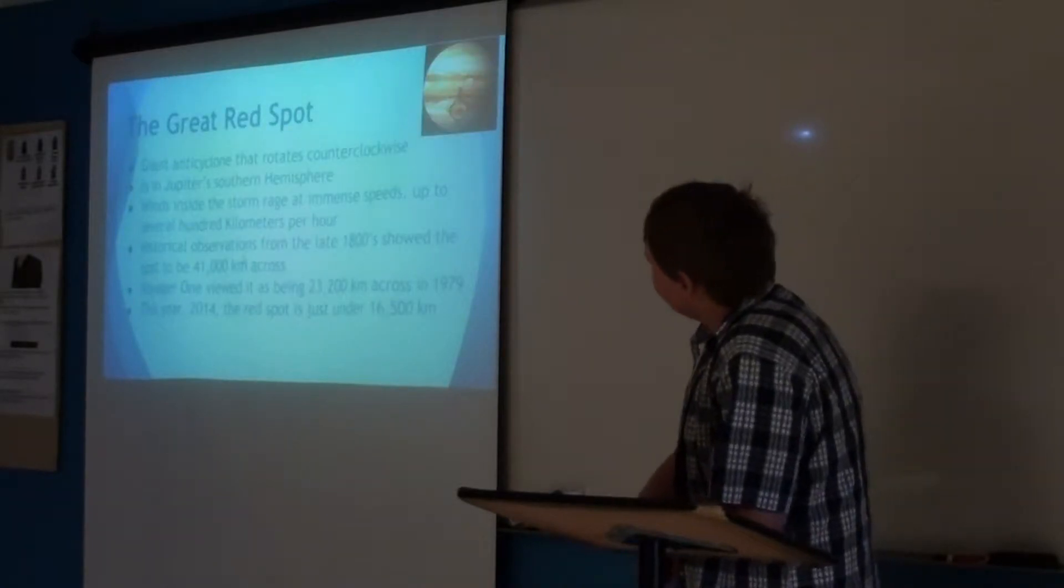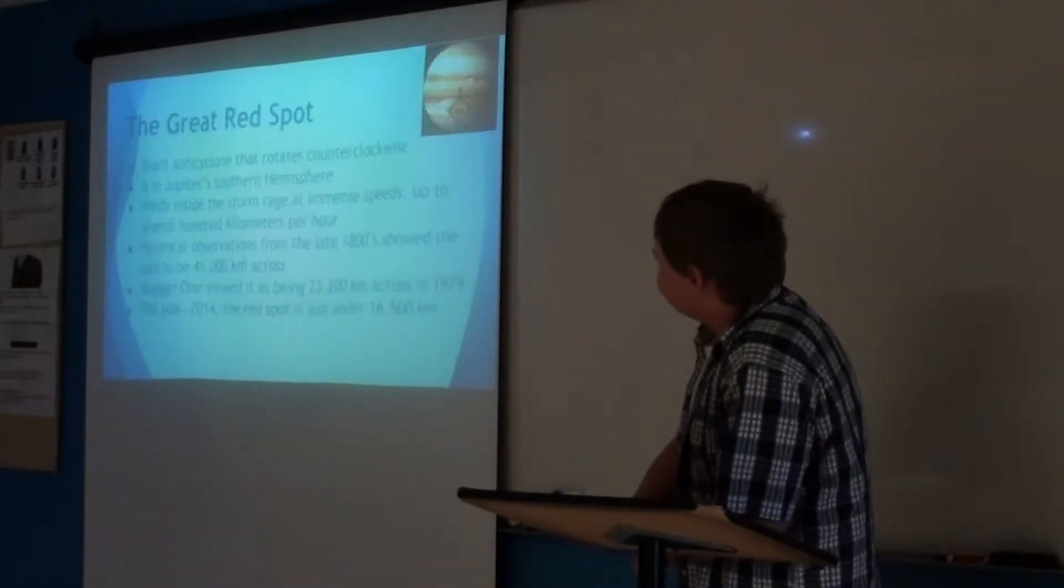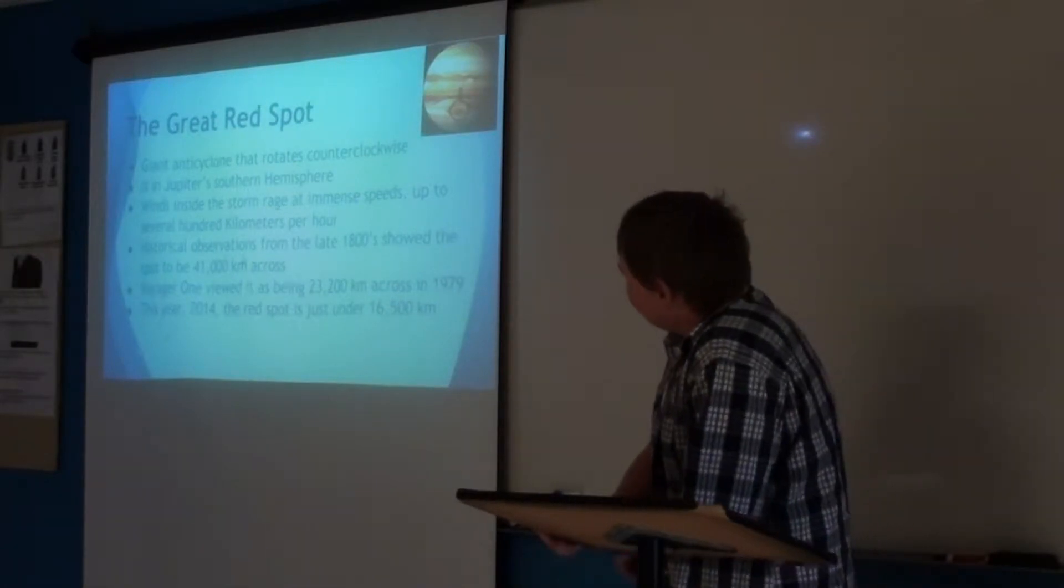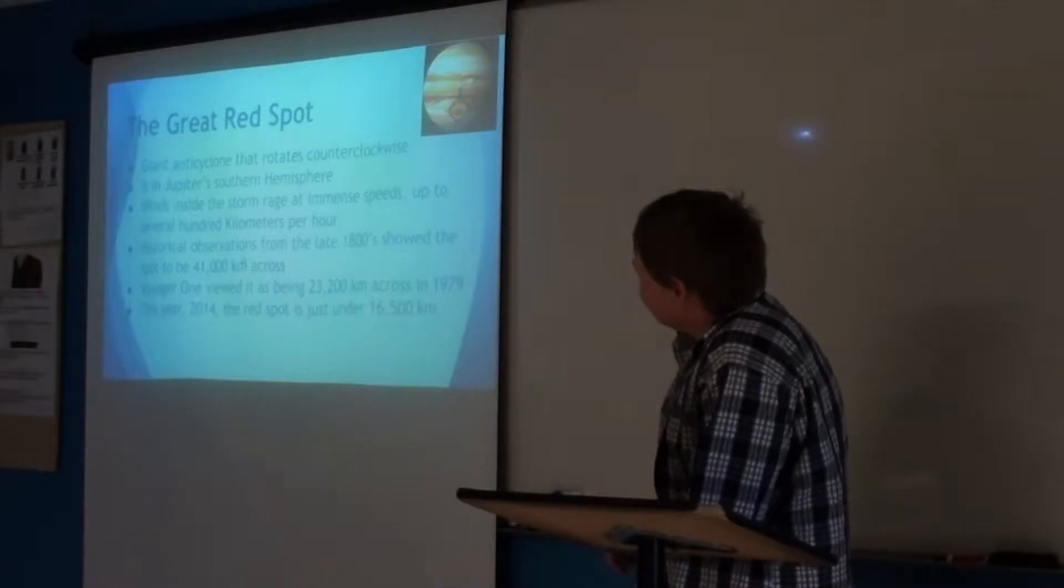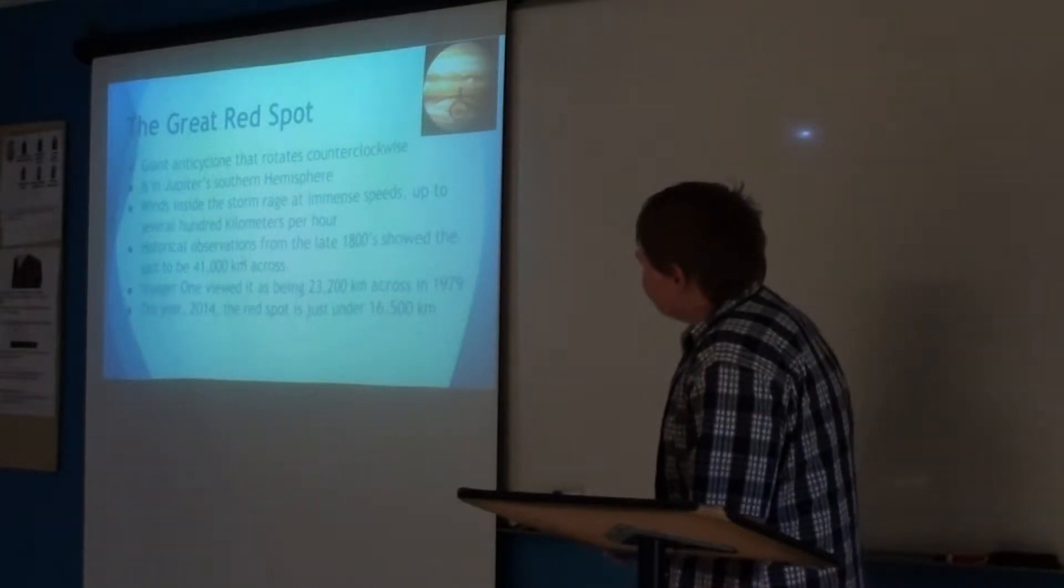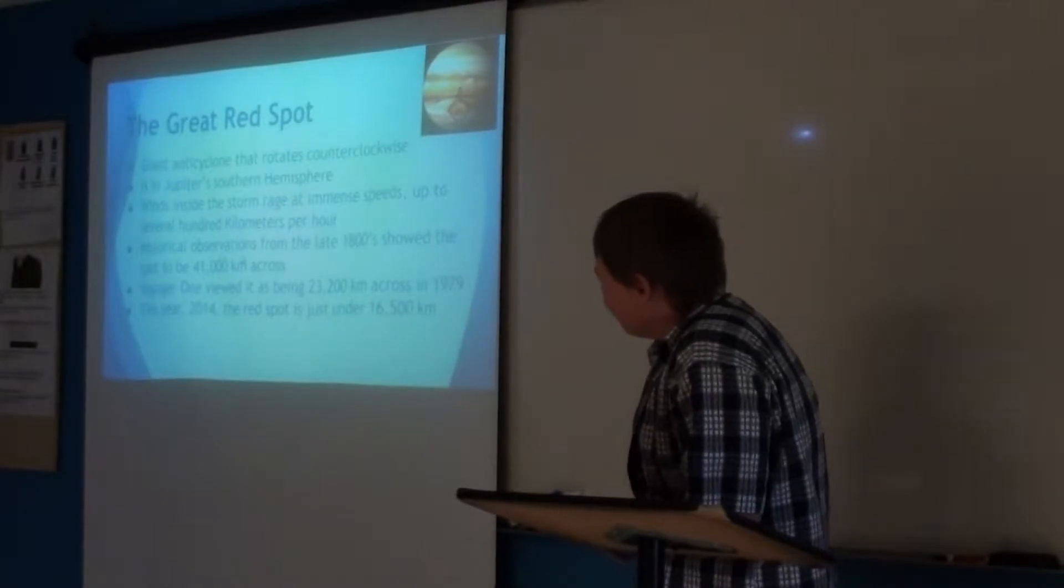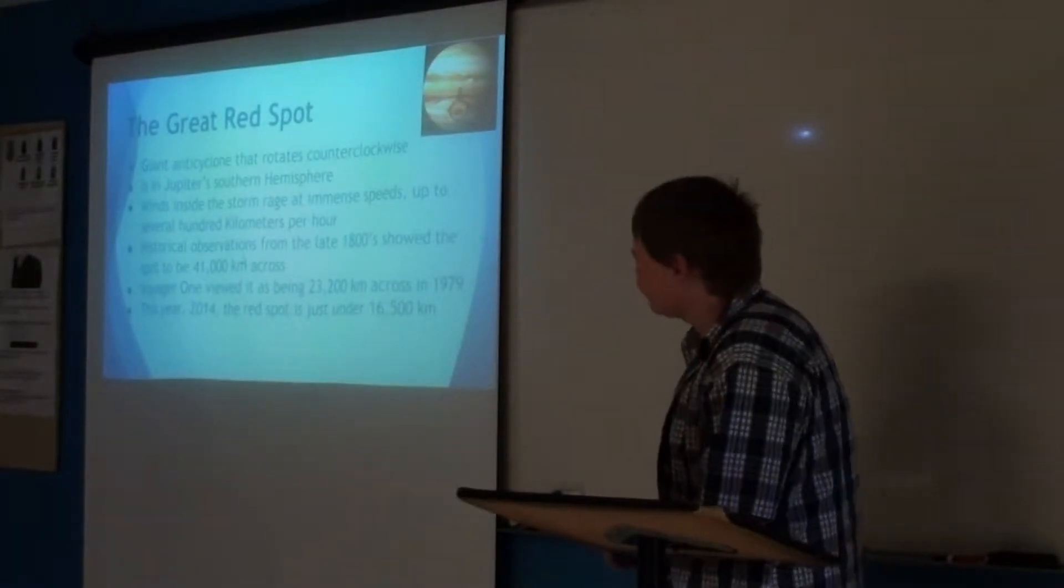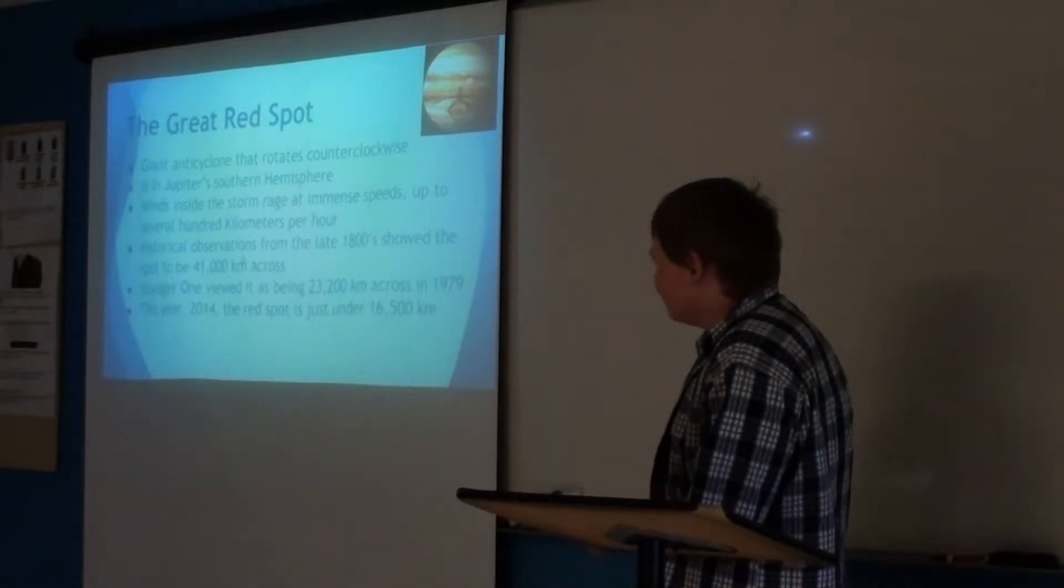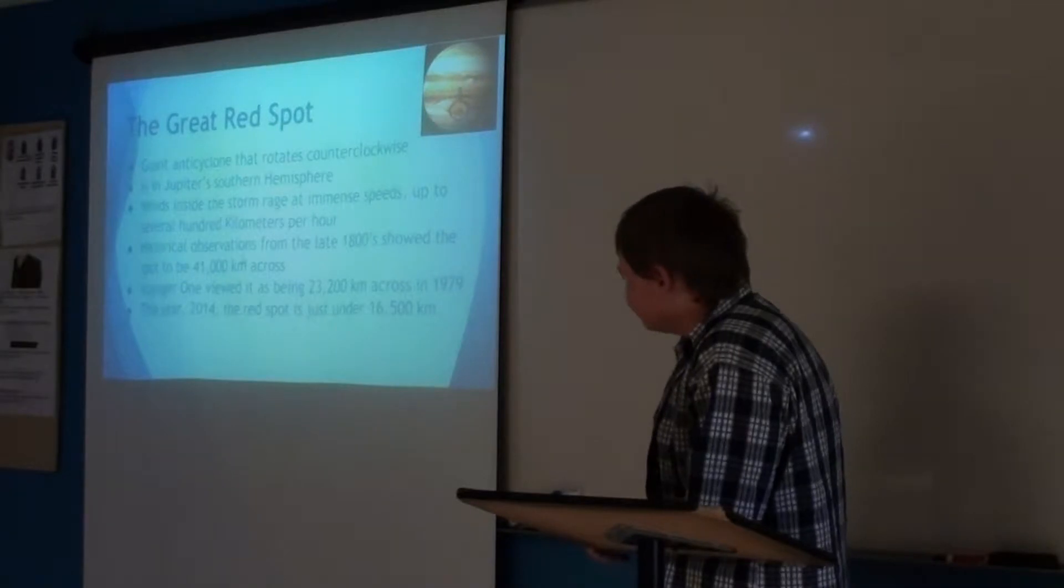The difference between Earth and Jupiter: the Great Red Spot, which is on Jupiter as you can see. The Great Red Spot rotates counterclockwise in Jupiter's southern hemisphere. Winds inside the storm reach speeds up to several hundred kilometers per hour, which is fast. Historical observations from the late 1800s showed the spot to be 40,000 kilometers across, and then Voyager 1 viewed it as 23,200 kilometers in 1979. By 2014, the big spot on Jupiter was under 16,500 kilometers.